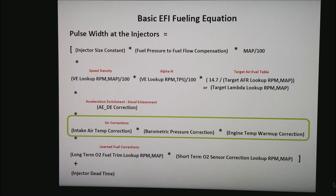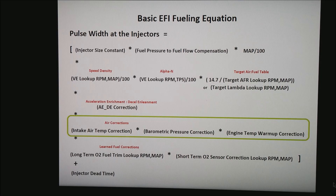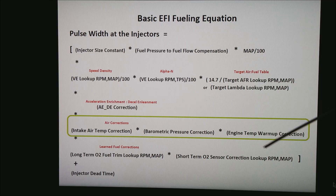The next set are what I call the air corrections. Basically this corrects for air density as it's coming into the air filter and heading out the exhaust system. The first one is at the air filter — or in the case of a turbocharged motor, normally this is taken after the throttle body. The next piece is the barometric pressure correction, which gives a correction for how well the intake manifold can hold the fuel in suspension.